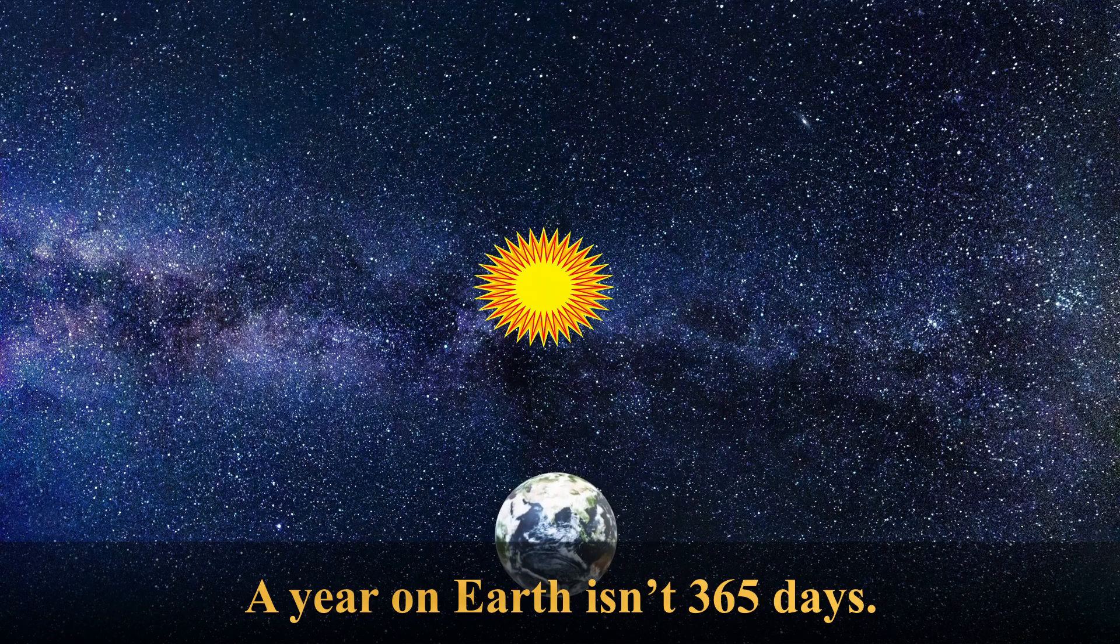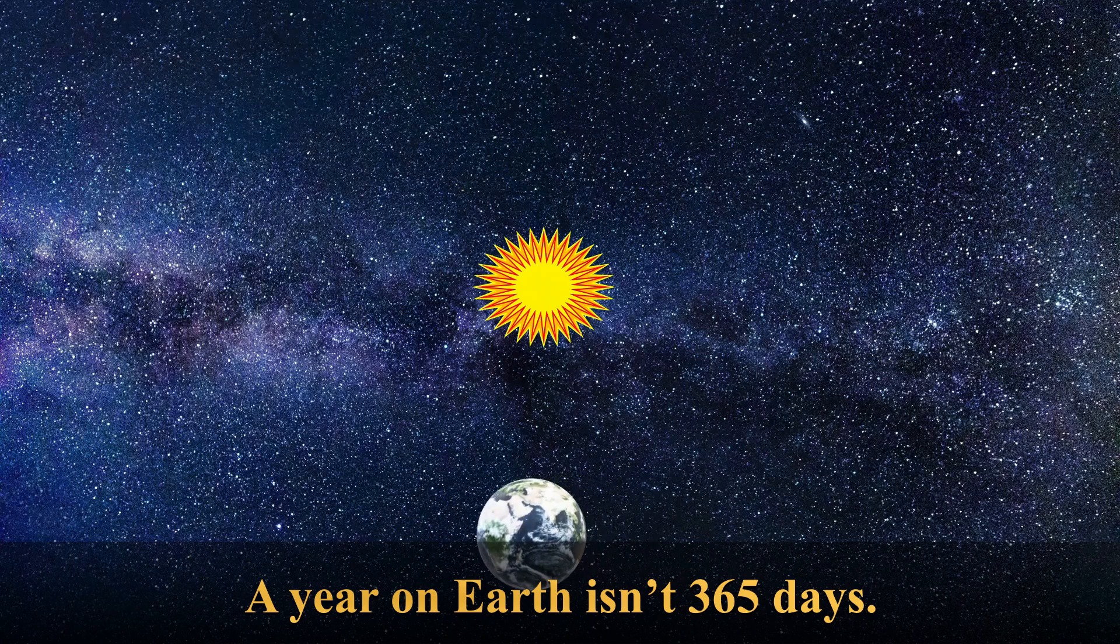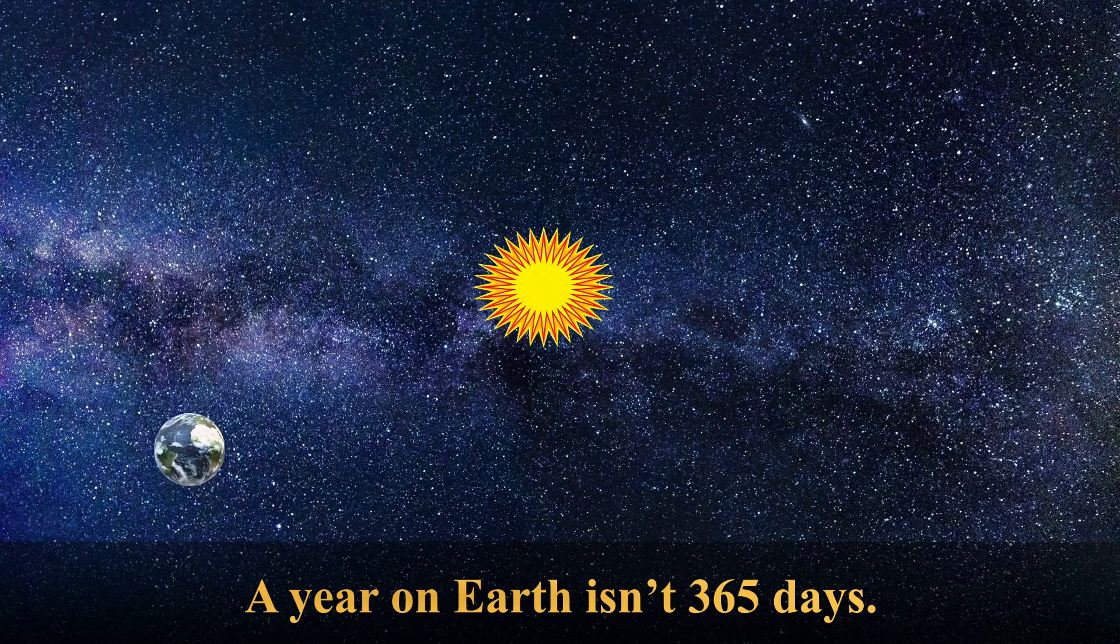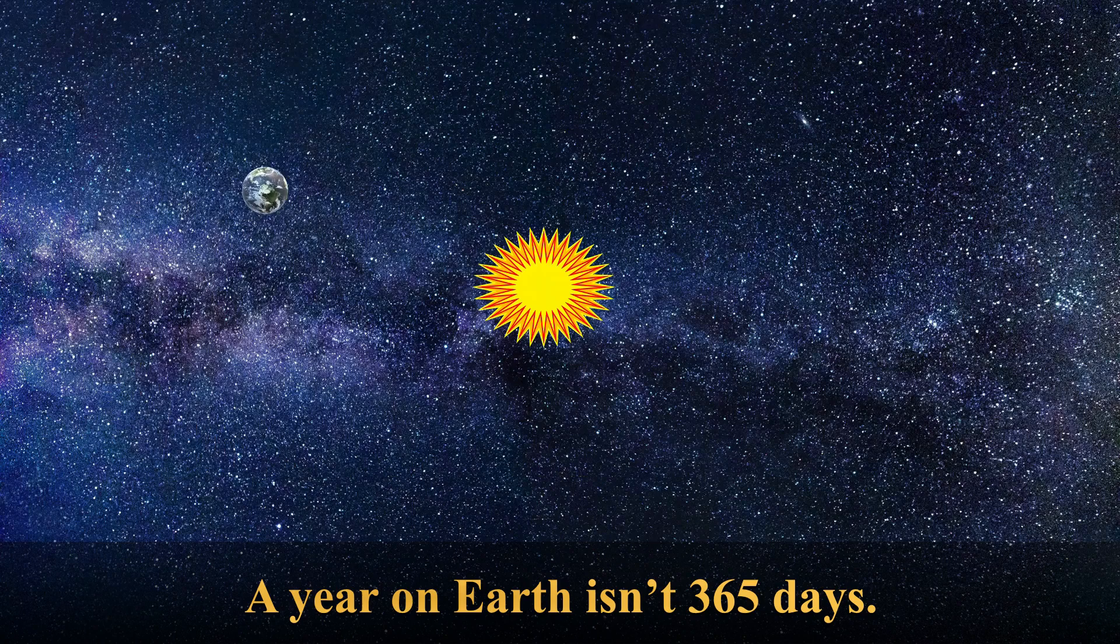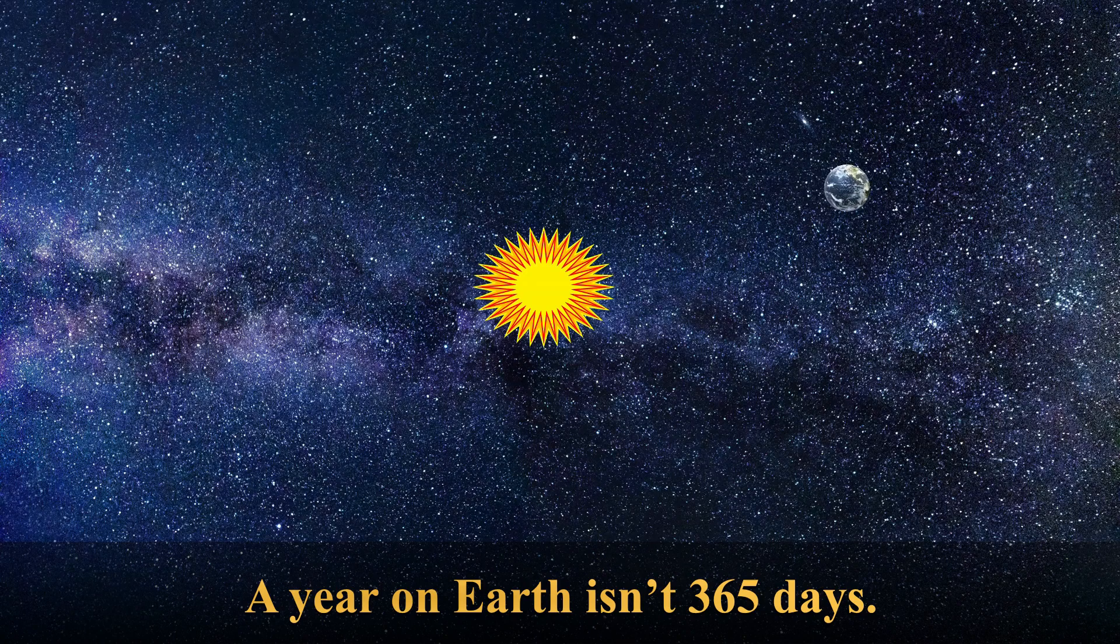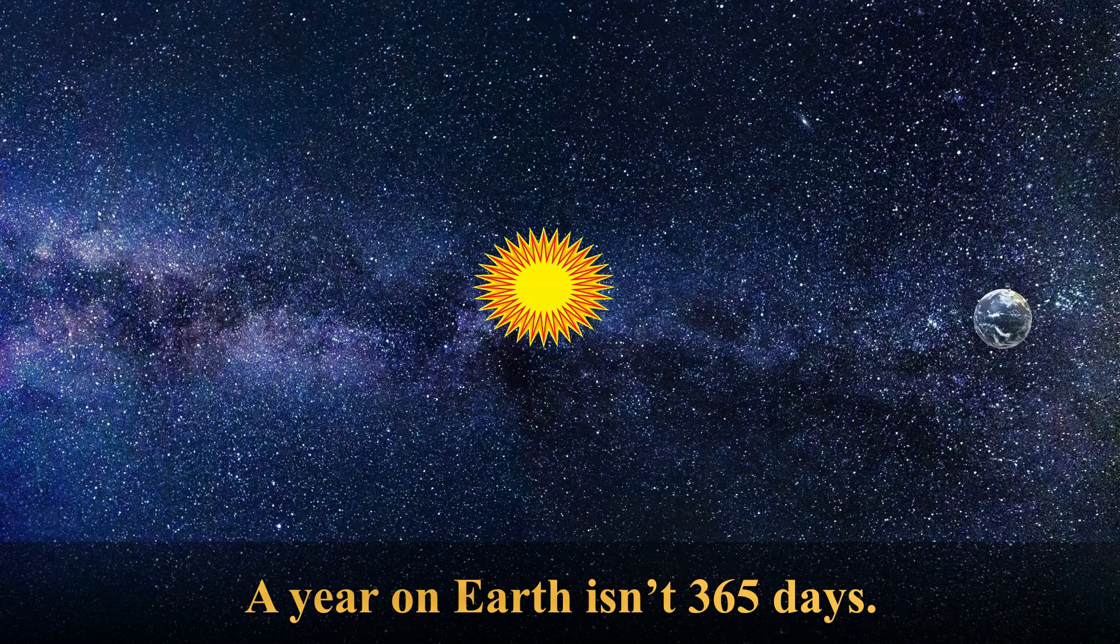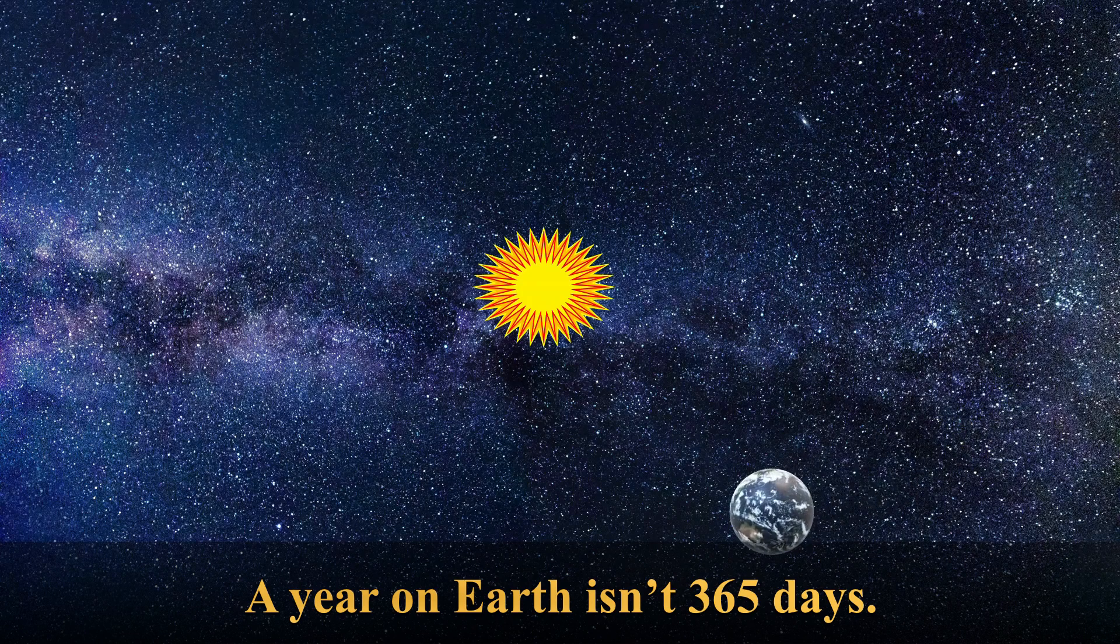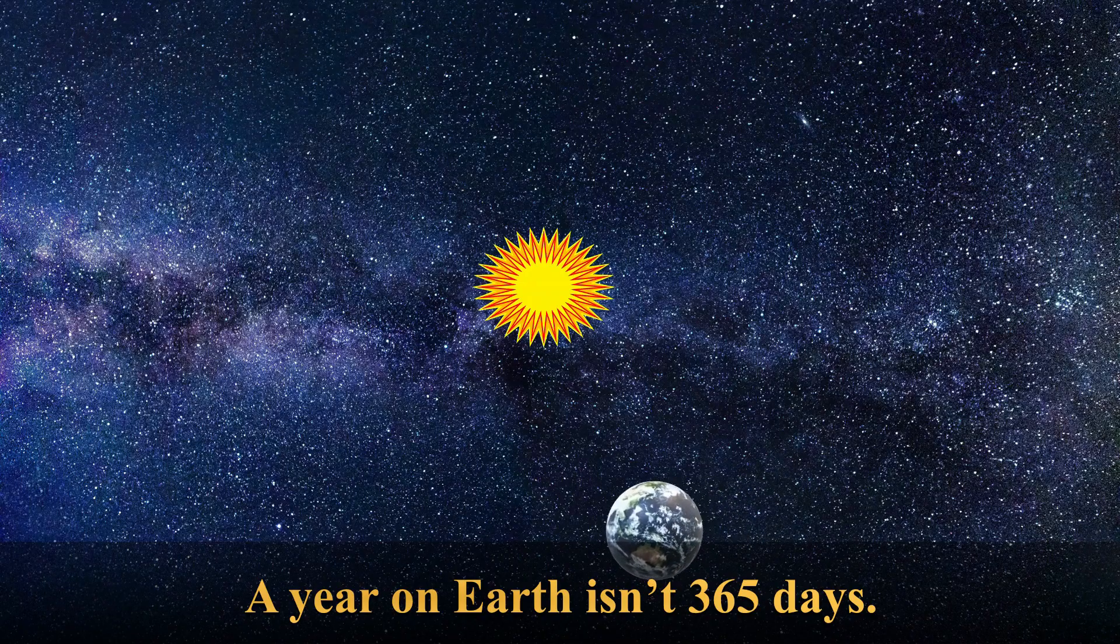3. A year on Earth isn't 365 days. It's actually 365.2564 days. It's this extra .2564 days that creates the need for a leap year once every four years. That's why we tack on an extra day in February every four years, 2004, 2008, 2012 and so on.